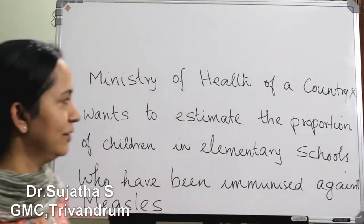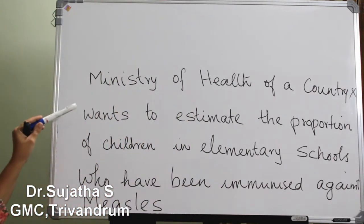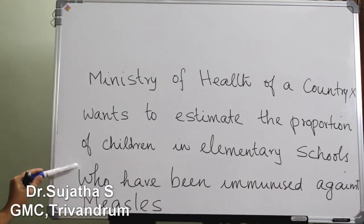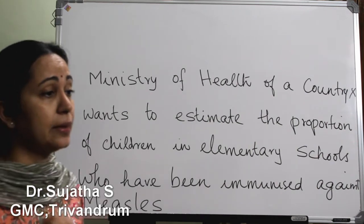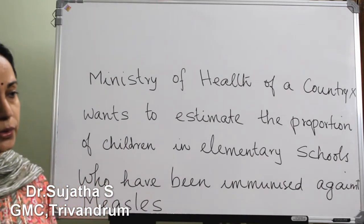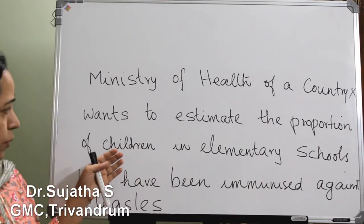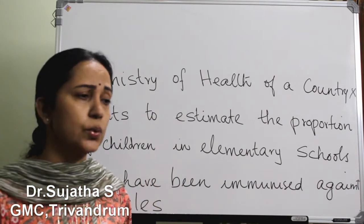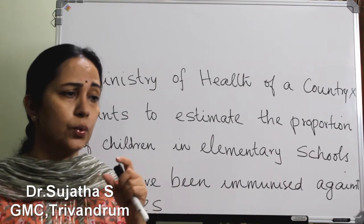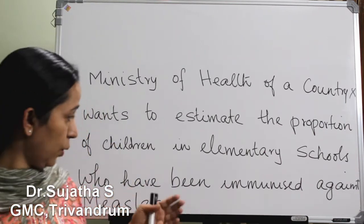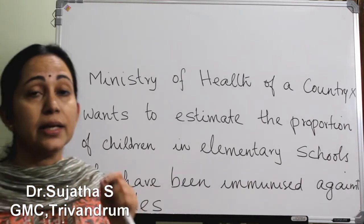I'll start with an example. The Ministry of Health in a country wants to estimate the proportion of children in elementary schools who have been immunized against measles, and they want to do this within a time period of one month. There will be millions of children studying in elementary schools in a country, so is it possible to go and evaluate the immunization history of each of these children?